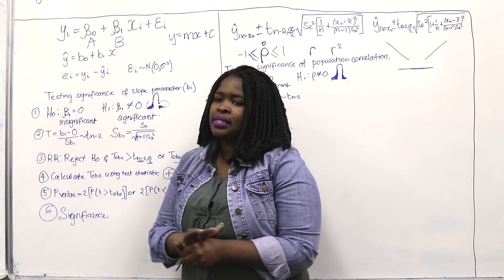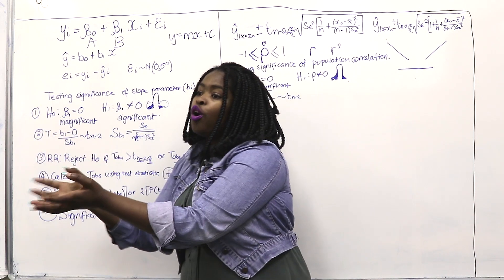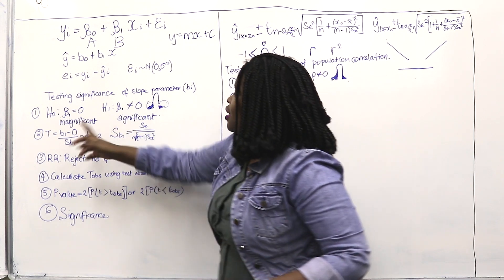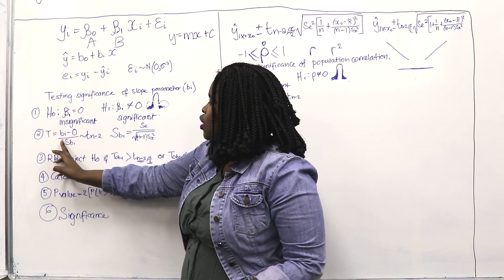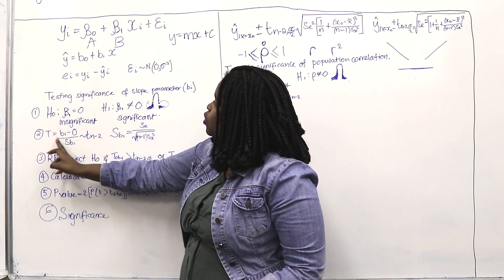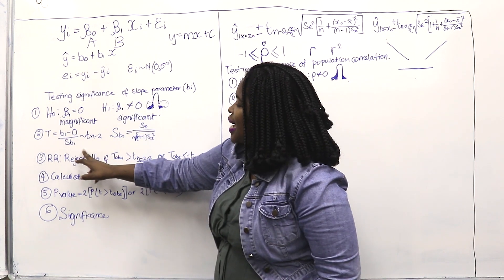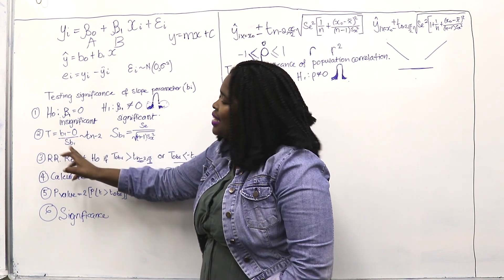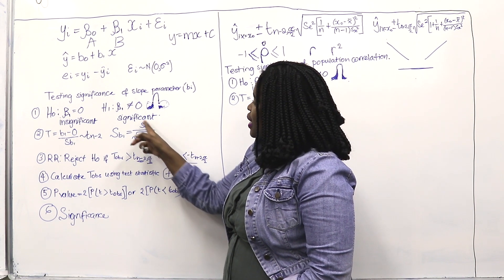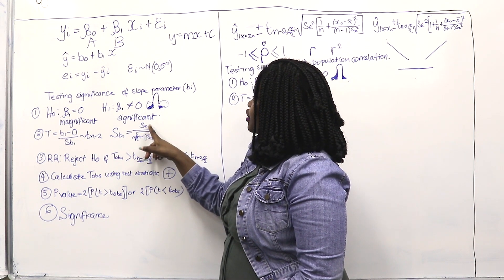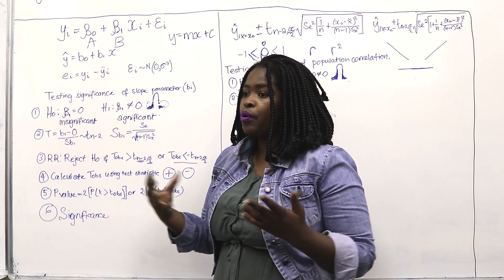When we are testing any hypothesis, the test statistic is associated with the parameters. If you have beta 1, the test statistic is equal to B1 divided by the standard error of B1. This standard error is calculated by an equation where SE is the standard deviation of the error.